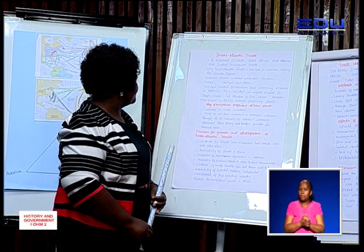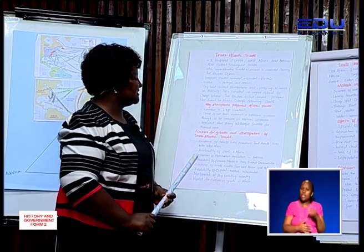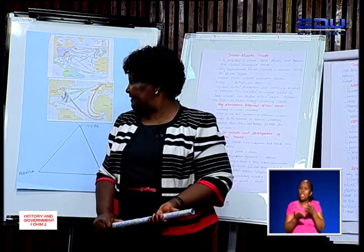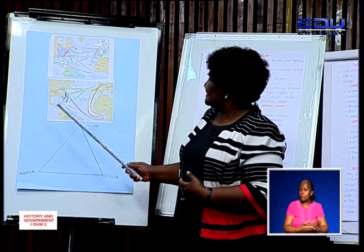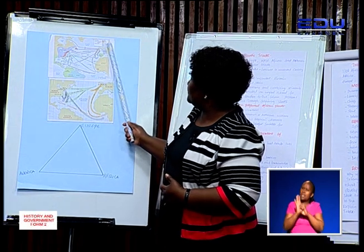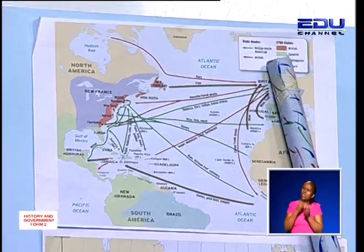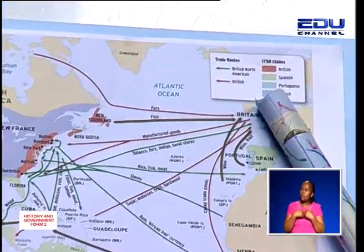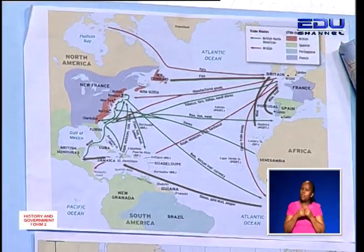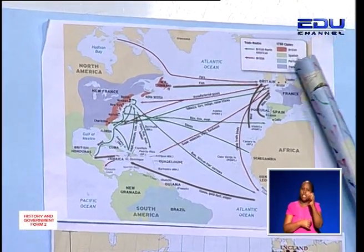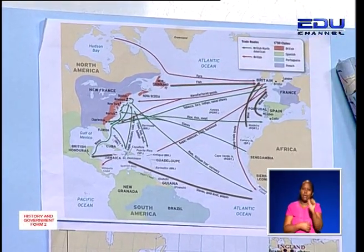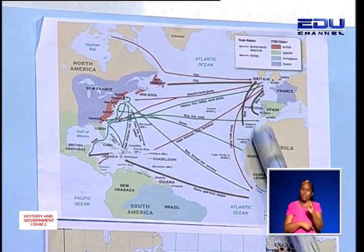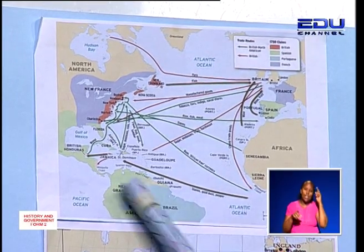There were several European powers that were involved in this form of trade. We have the British of Britain as a country, we have Spain, we have Portugal, and we have France. These are the names of the peoples because they are the ones that were involved in this trade.